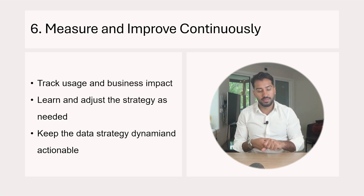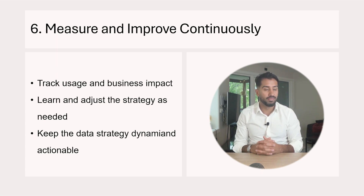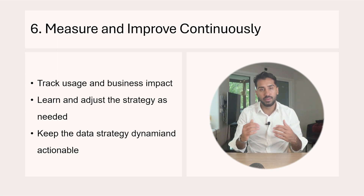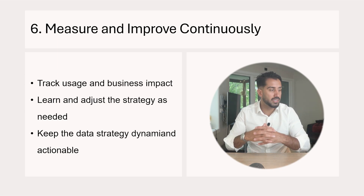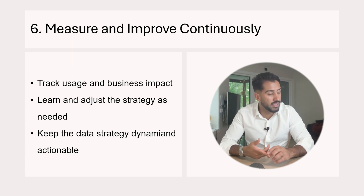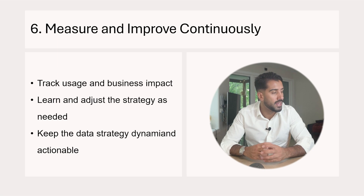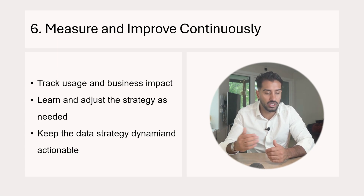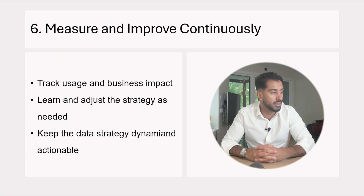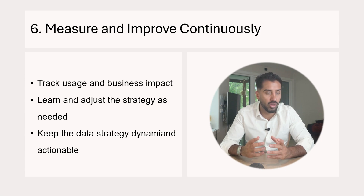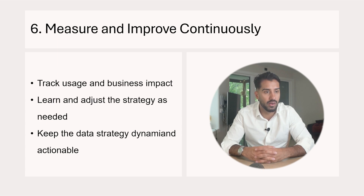Figure out how to measure progress in your initiatives. That could be KPIs like number of iterations or how much has been delivered. Usage is a good KPI — something easy to understand, like how many people are using the reports, analytics, or data product — and then try to connect the decisions or impact of that usage to business outcomes.